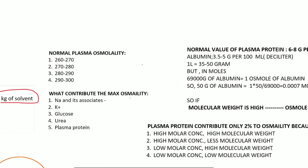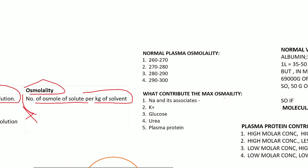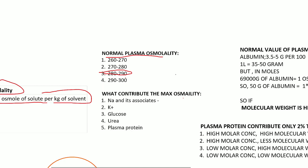Now let us solve some MCQs. What is the normal plasma osmolarity? The options are 260–270, 270–280, 280–290, or 290–300. The correct answer is 280–290. If the question asks for a single specific value, the answer would be 290.